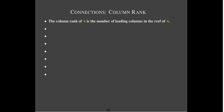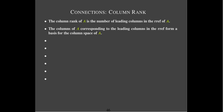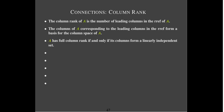Similar statements apply to column rank. The column rank is the number of leading columns in the reduced row echelon form of A. For the column space, we have to be careful — we can't use columns from the reduced row echelon form; we go back to the original matrix. The columns of A corresponding to the leading columns of the reduced row echelon form make a basis for the column space of A. You have full column rank if and only if the columns form a linearly independent set, or equivalently, if the reduced row echelon form has no free columns.